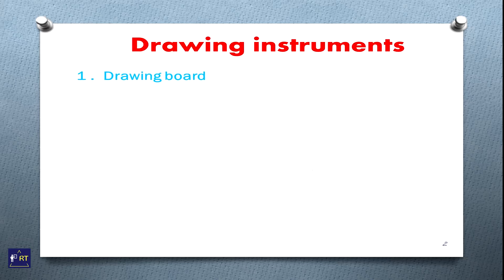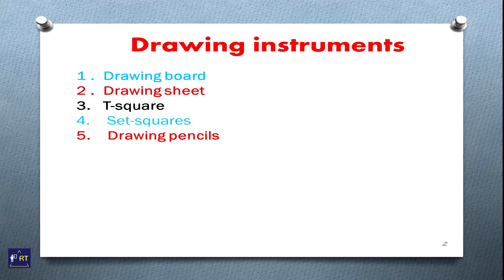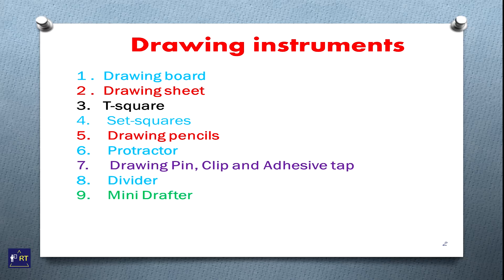Drawing instruments: 1. Drawing board, 2. Drawing sheet, 3. T-square, 4. Set square, 5. Drawing pencil, 6. Protractor, 7. Drawing pin, clip, 8. Adhesive tape, 8. Divider, 9. Mini drafter, 10. French curve. These are the different types of drawing instruments.